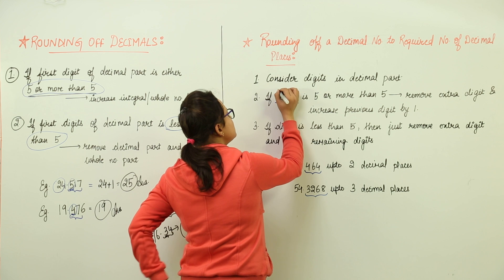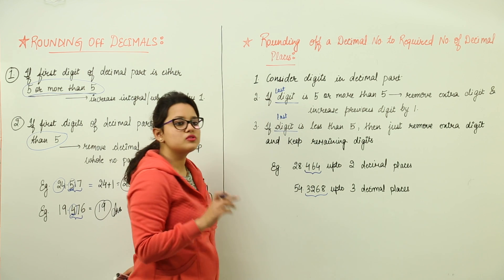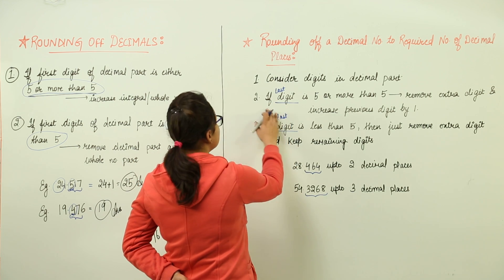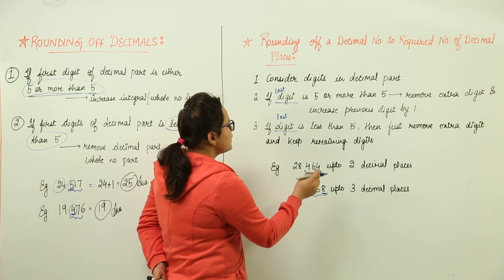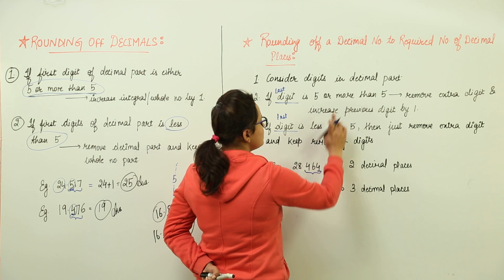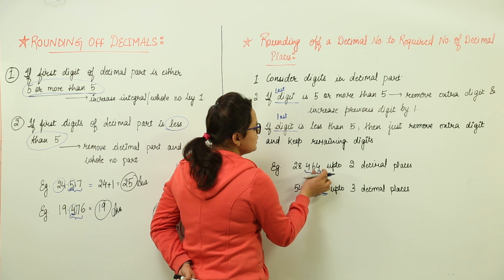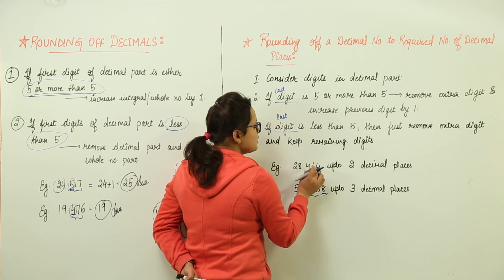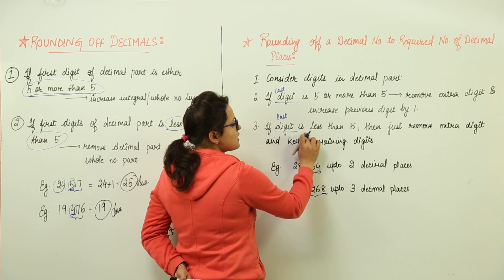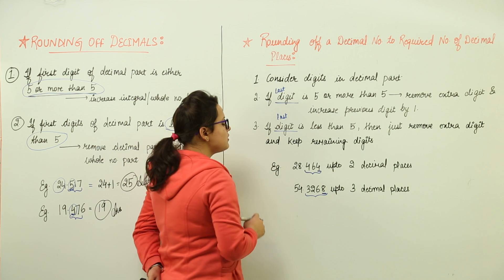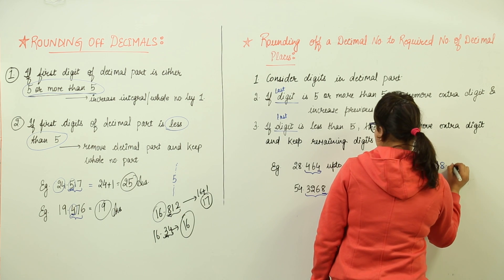Here we are talking about the last digit — the last digit of the decimal part up to the required place. For example, 28.464 rounded to 2 decimal places: the decimal part is 464 and the last digit we are considering is 4, which is lesser than 5. So we simply remove that extra digit and keep the remaining, giving us 28.46.